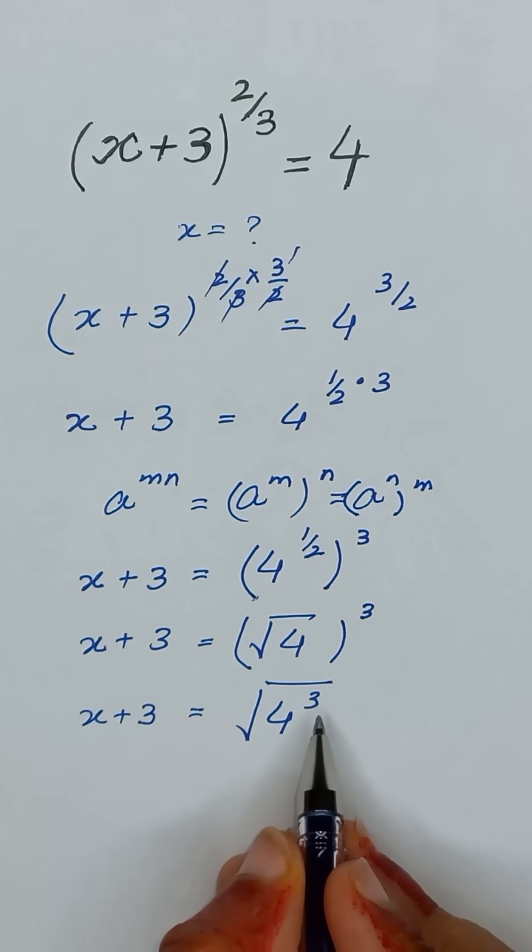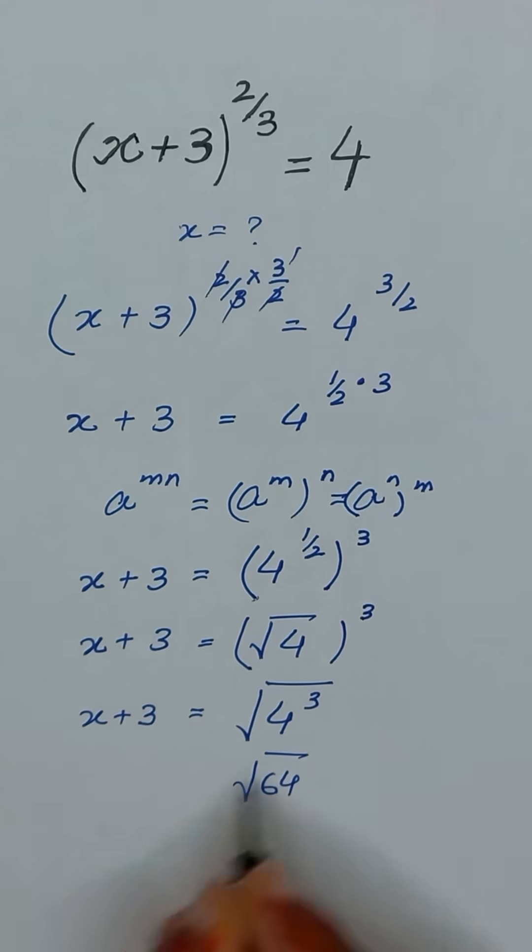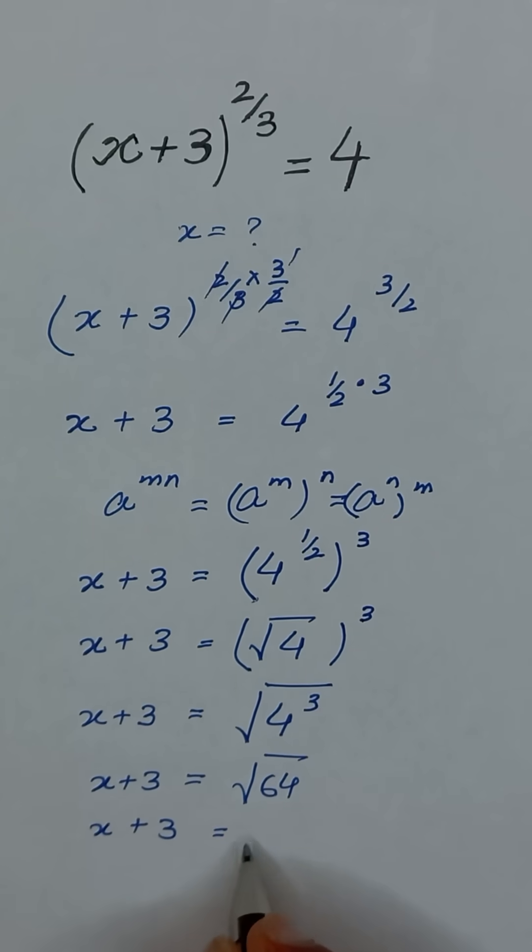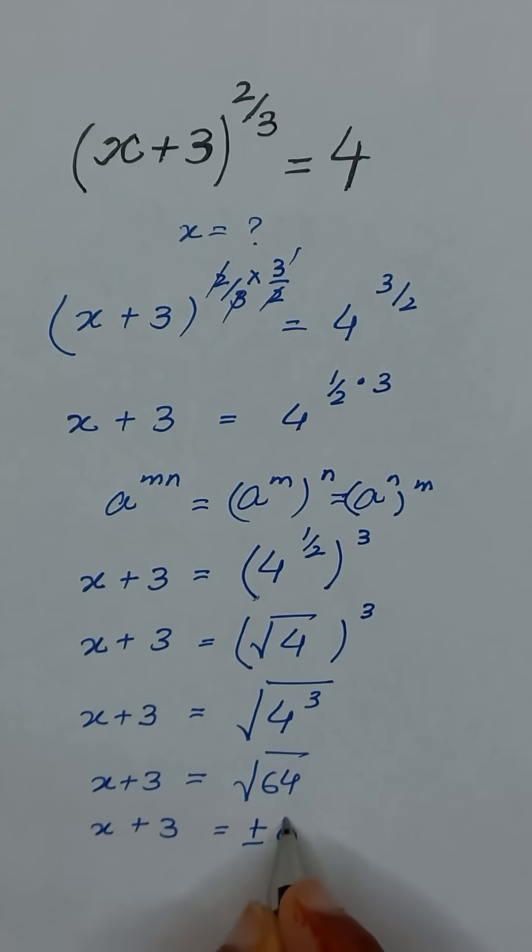Now 4 cube is same as 64 and it's square root. So x plus 3 will be equal to 64 which is same as plus minus 8.